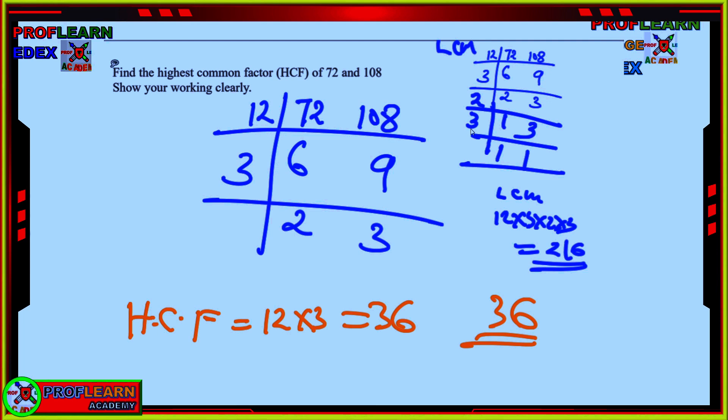In the event you are going to be asked about LCM, then, whenever you have reached to 2 and 3, you can proceed. 2 goes to 2 once, and 2 goes to 3. 3 is not divisible by 2, so you take 3 down. And at this point also, you take 3. And then, the final answer becomes 12 times 3 times 2 times 3, which becomes 216. And that is the LCM. So, if you are asked HCF and LCM, this is what you are supposed to do.